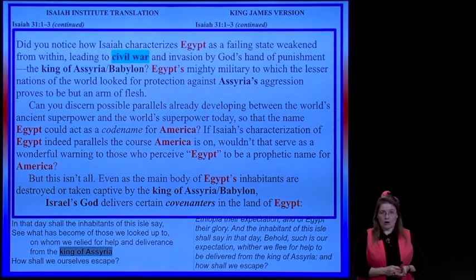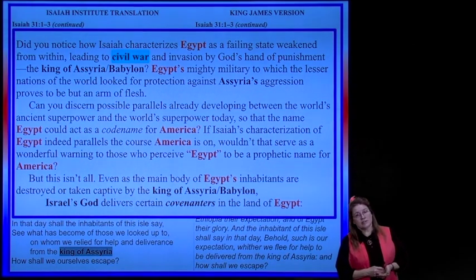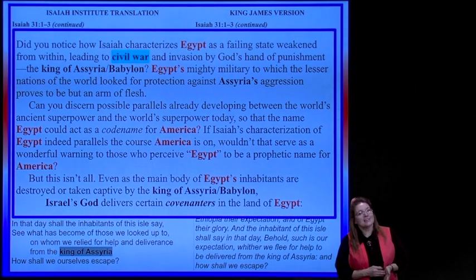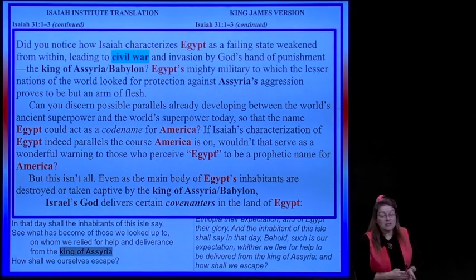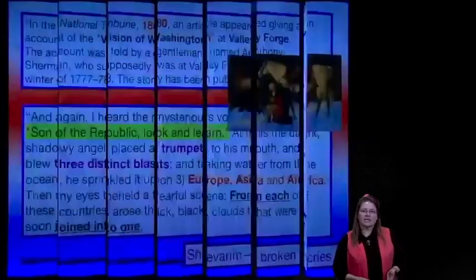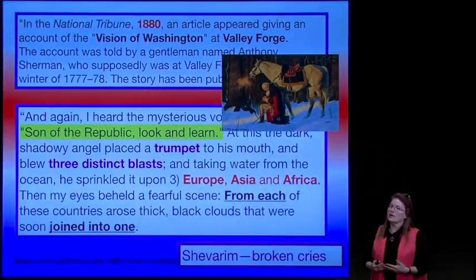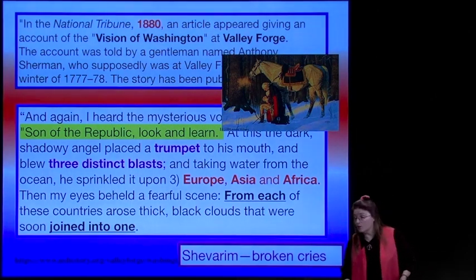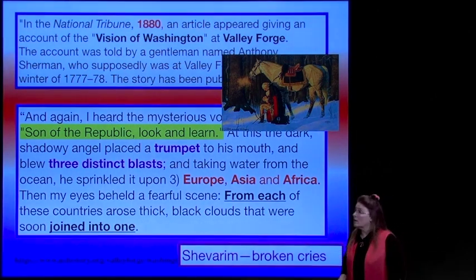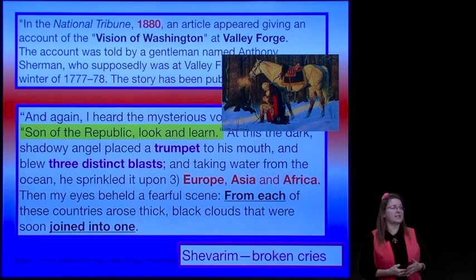But that isn't all. Egypt's inhabitants are destroyed or taken captive by the king of Assyria or Babylon. But Israel's God delivers certain covenanters in the land of Egypt. So let's take a look at this particular part of the prophecy—there are people who repent and turn back to the Lord and fulfill a mission at that time.